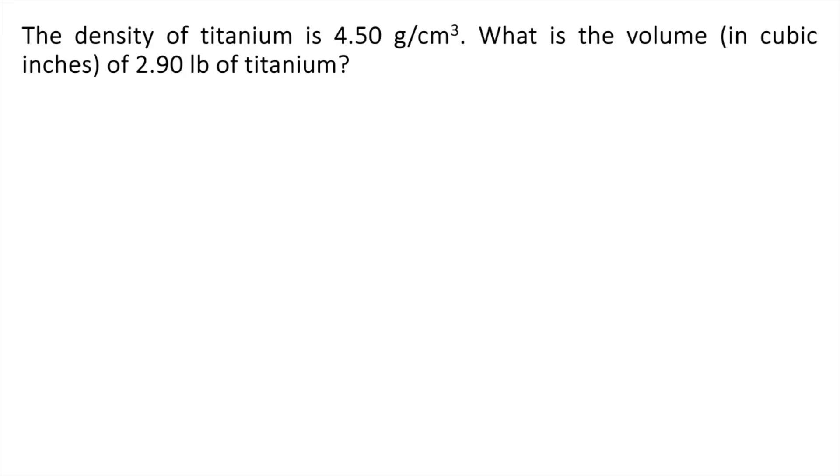The density of titanium is 4.50 grams per cubic centimeters. What is the volume in cubic inches of 2.90 pounds of titanium?